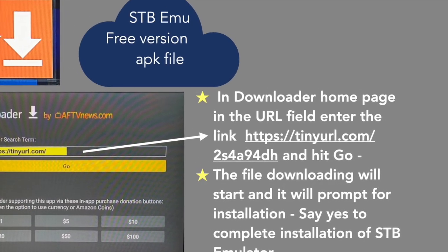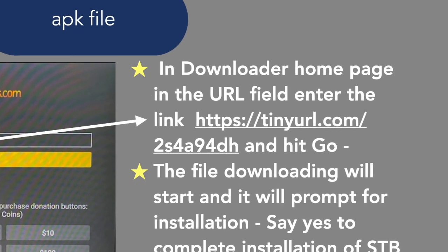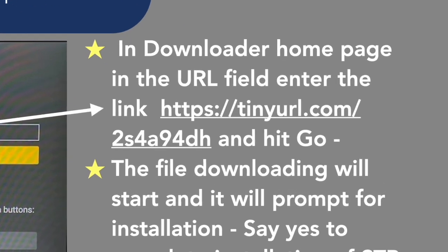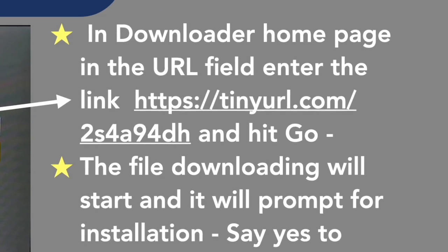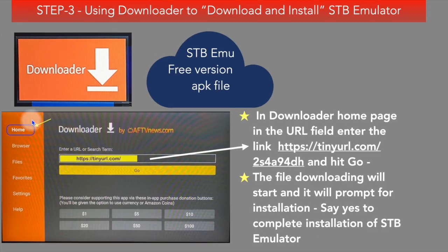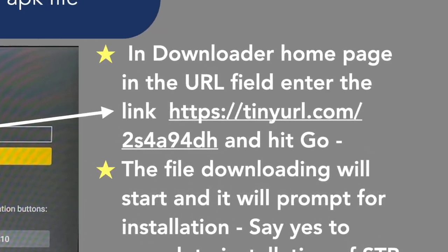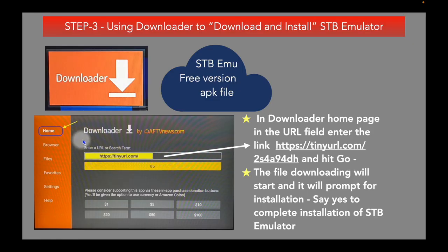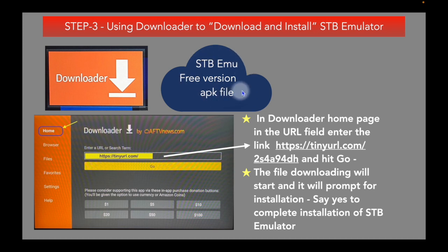Open the Downloader app from the home page. In the URL field, fill in the provided link and hit the Go button. The STB Emulator free version is available at that link. The file will be downloaded and you will be prompted to install the app — select Install and complete the installation.